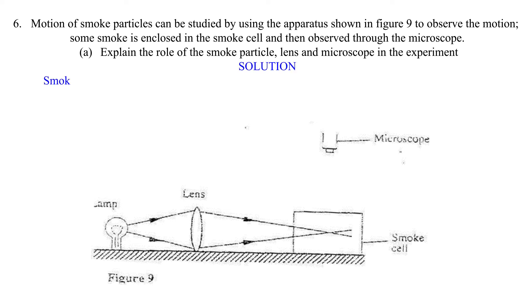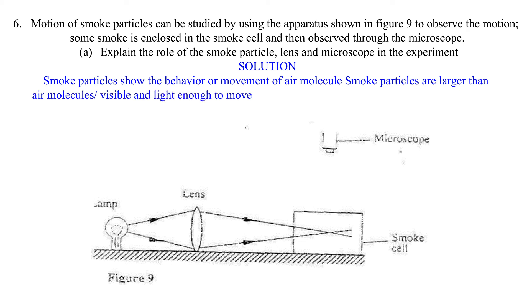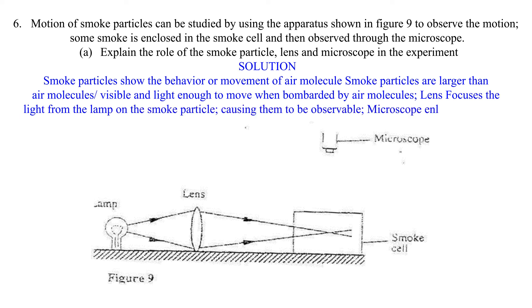Solution: Smoke particles show the behavior or movement of air molecules. Smoke particles are larger than air molecules, visible, and light enough to move when bombarded by air molecules. The lens focuses light from the lamp on the smoke particles, causing them to be observable. The microscope magnifies the smoke particles so they are visible.